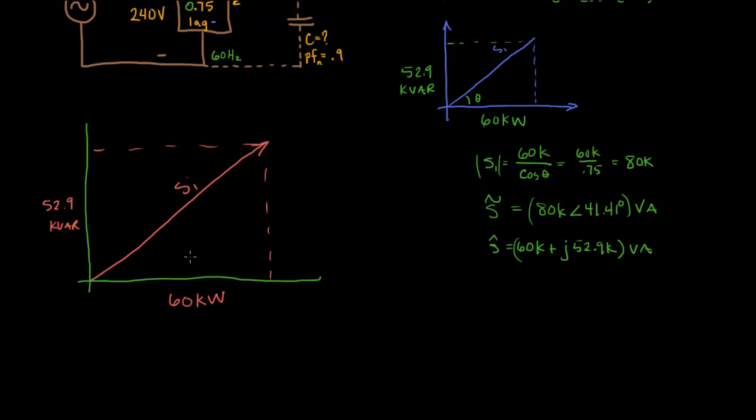We already had that angle theta in here. Now what we want to do is we want to bring the power factor to 0.9. So we want PF nu equal to 0.9. To do that, we need to calculate what the angle would be.